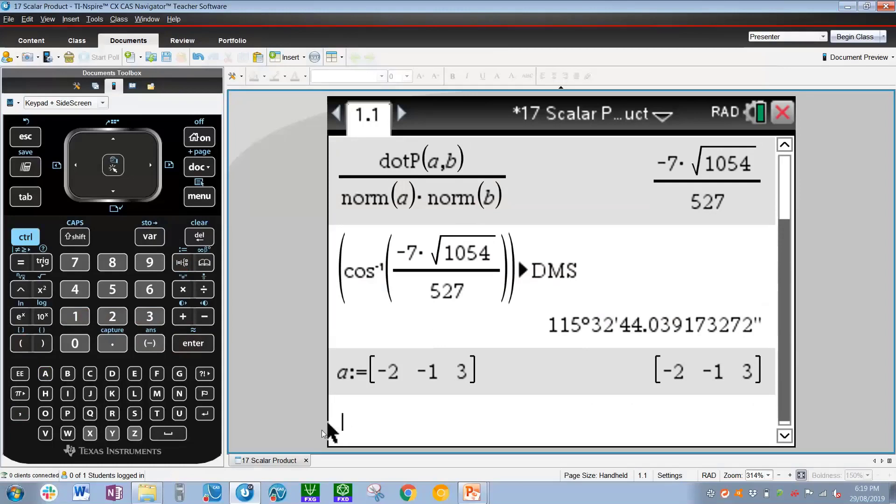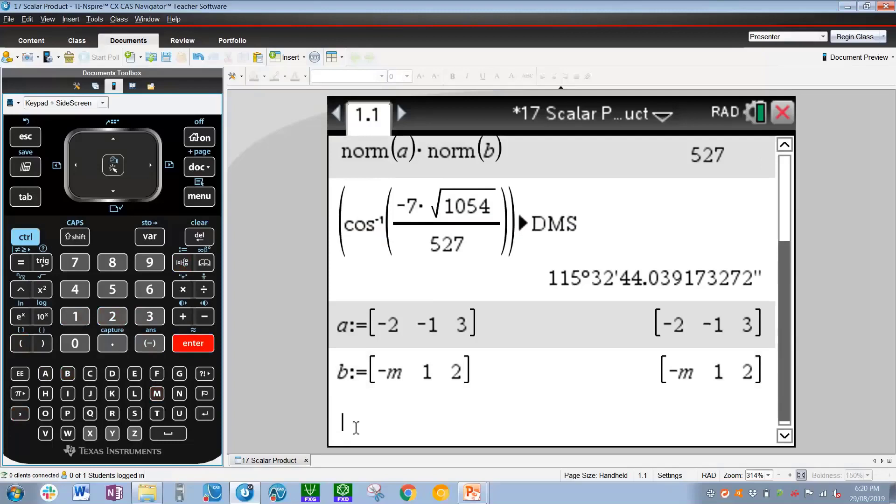So now going to vector b, b, control template, which is define, and control open bracket. Now let's type in vector b, which is -mi, and then j, which is simply 1, and 2k, which is 2. Press enter. Now we've defined vector a and b.